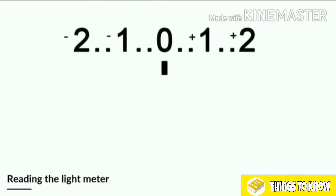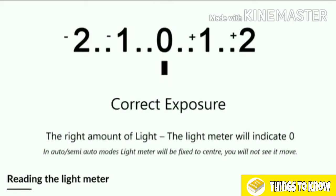Let's learn how to read the light meter. When the light meter is at 0, we've got the correct exposure — the right amount of light in the scene. In semi and auto modes, the light meter will always be fixed in the center. If we switch to fully manual mode and move the camera around, we'll see the light meter jump as the light changes. But in semi-auto and auto modes, it remains fixed at the center because these modes just want to make sure we get the correct exposure for the scene.